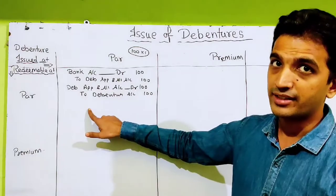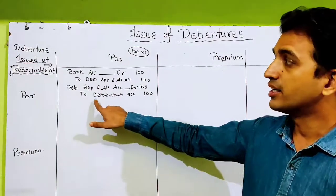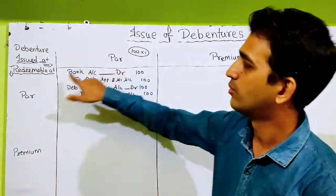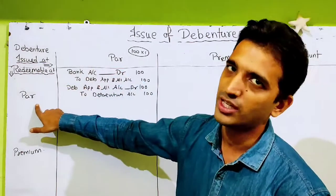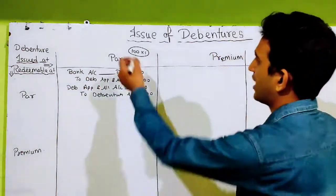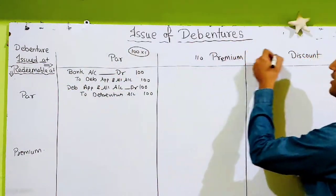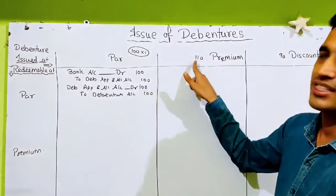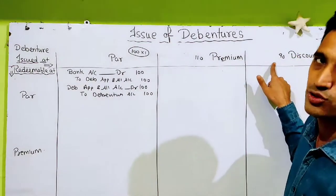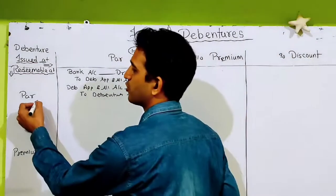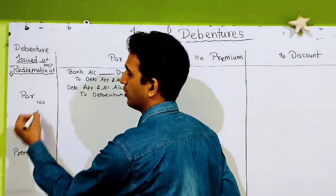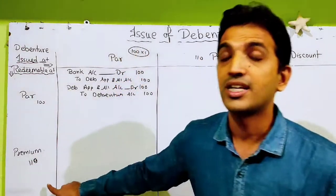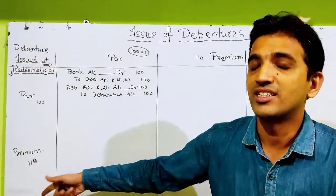अब यह redemption किसको? Debenture holder को पैसे कितने देने थे? Par का मतलब होता है 100. Par का मतलब 100, premium का मतलब — एक example लेते हैं — premium का मतलब 110, discount का मतलब 90.